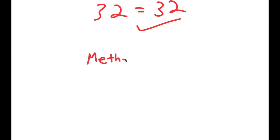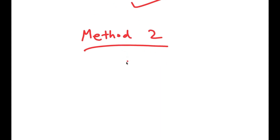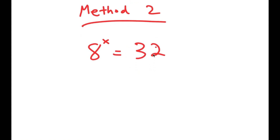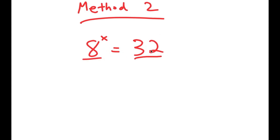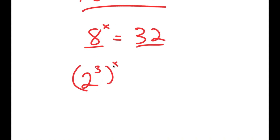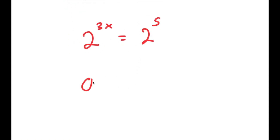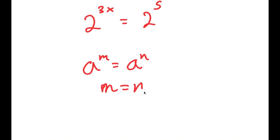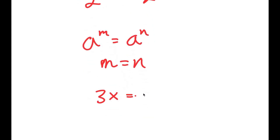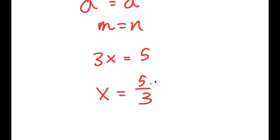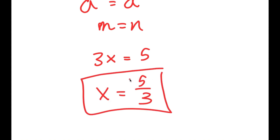I also have a second method of solving this problem. For the second method, we have the same equation: 8 to the power of x is equal to 32, and this is a simpler method. I'm going to start by rewriting both numbers with the same base: 8 as 2 to the power of 3, and 32 as 2 to the power of 5. So 2 to the power of 3 to the power of x equals 2 to the power of 3x, which equals 2 to the power of 5. Because these two have the same base, 3x equals 5, and x equals 5 over 3.